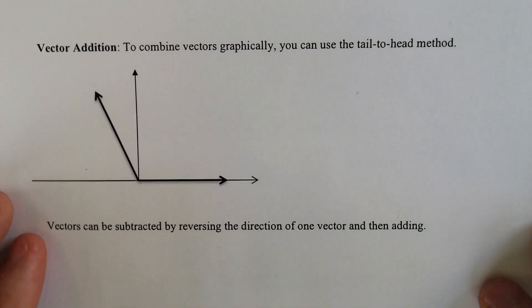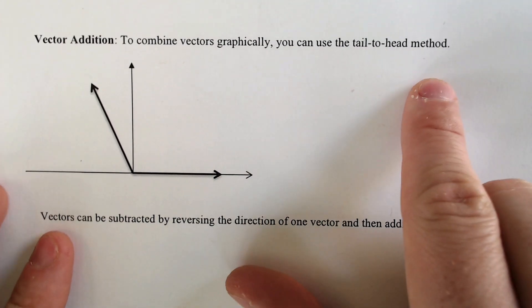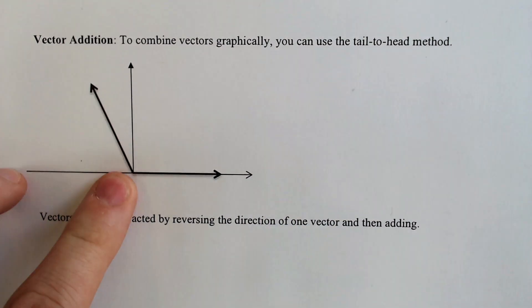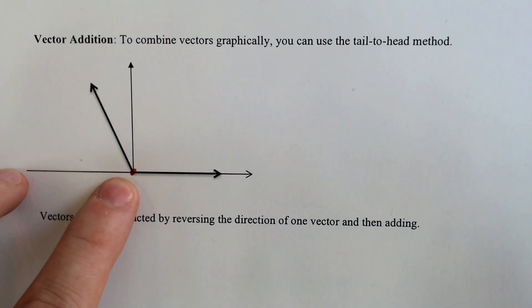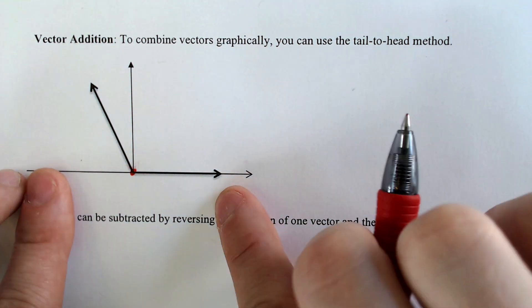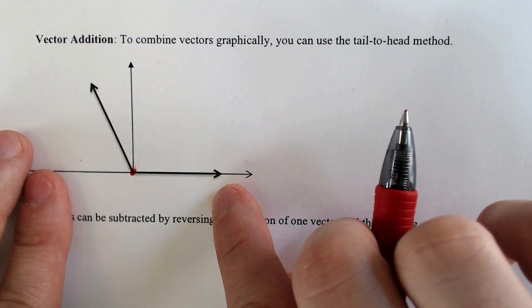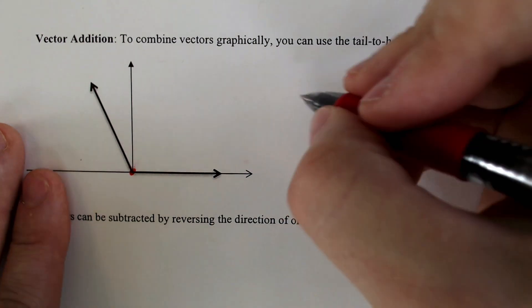So vector addition, you need to use the tail to head method. So you need to take the tail of one of the vectors. This dot right here would be the tail of both of these vectors and move it to the head, which is the arrow part, the arrow head of the other vector. So for instance, when you do this, you would get a resultant.